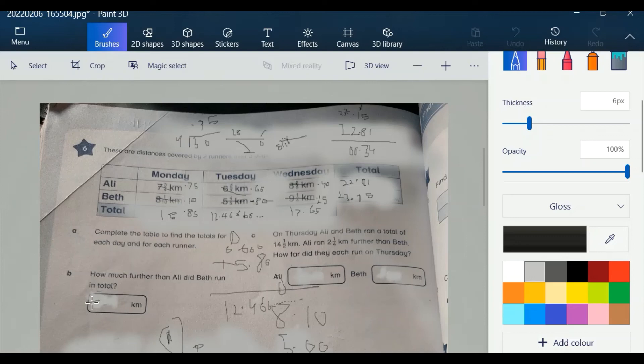On Thursday, Beth ran a total of 14 and a half miles, meaning 14.5 miles, and Ali ran 2.25 kilometers further than Beth. So if Beth ran 14.5, and Ali has ran 2.25 more, we will add 2 and 14, it becomes 16, and 25 plus 5 is equal to 75, so the answer is 16.75. Thanks for joining Alafis.